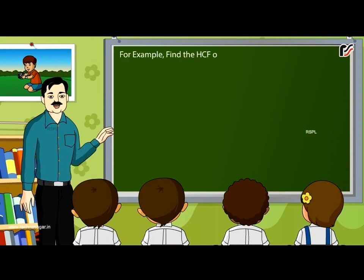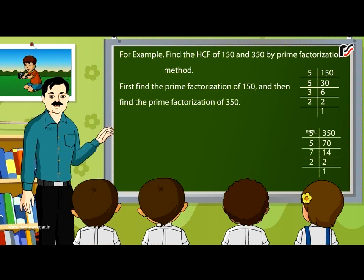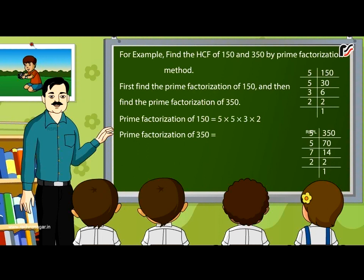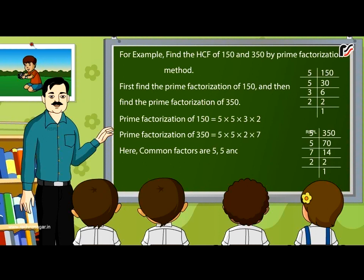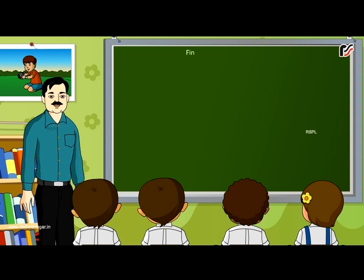For example, find the HCF of 150 and 350 by prime factorization method. Prime factorization of 150 = 5 × 5 × 3 × 2. Prime factorization of 350 = 5 × 5 × 2 × 7. Common factors are 5, 5 and 2. Therefore, HCF = 5 × 5 × 2 = 50.